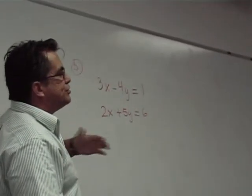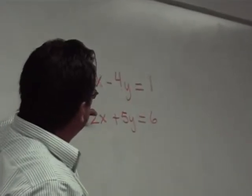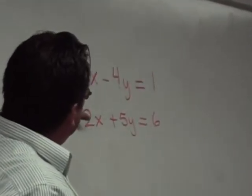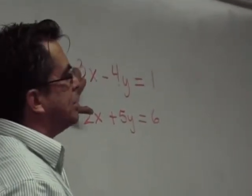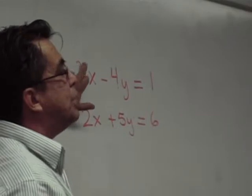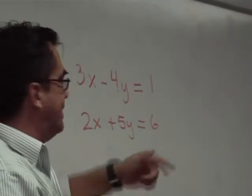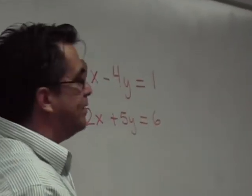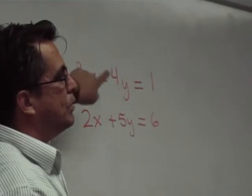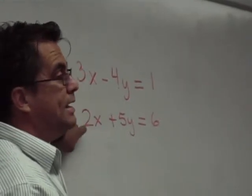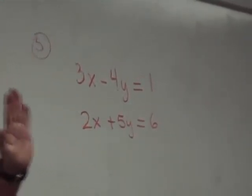Let's say that I decide I want to cancel the x's. I've got to ask myself, what can these two numbers go into? They both go into 6. Then my job is to change one of them into a positive 6 and the other into a negative 6. That's the hint.